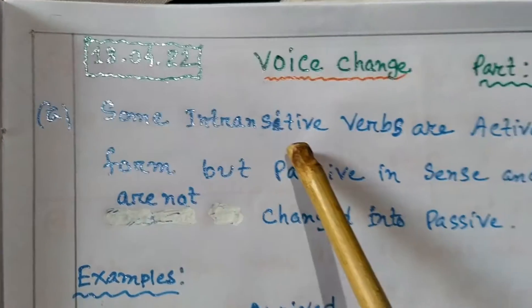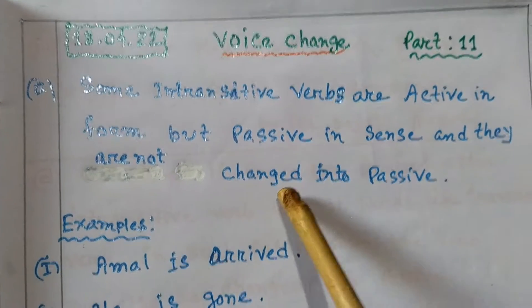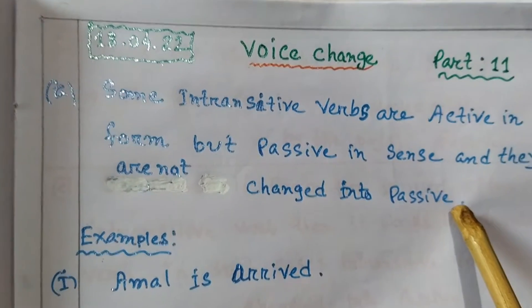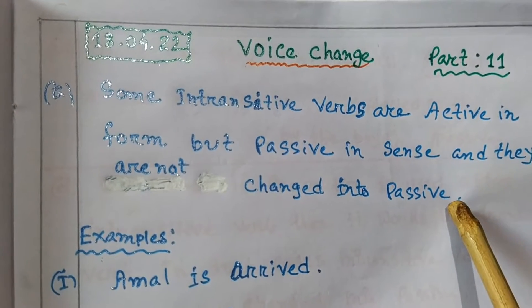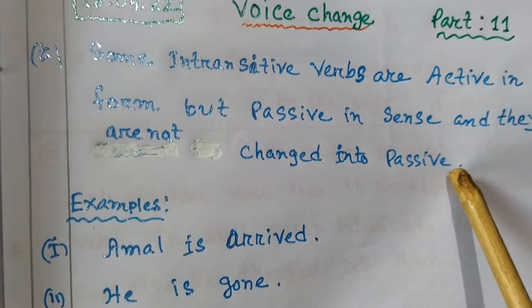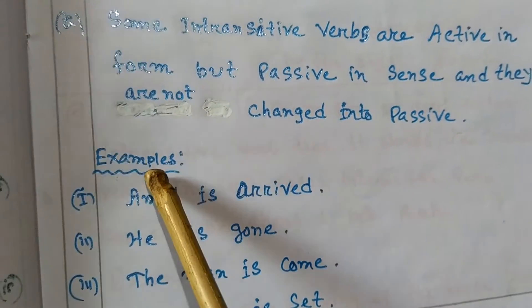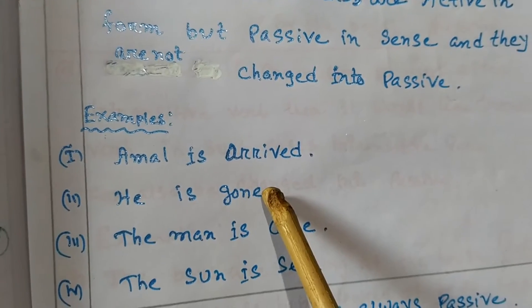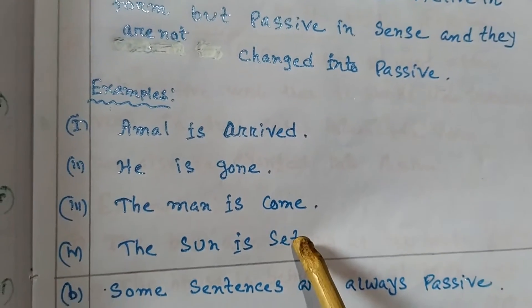Number one: some intransitive verbs are active in form but passive in sense, and they are not changed into passive. Examples — Number 1: Amal is arrived. Number 2: he is gone. Number 3: the man is calm. Number 4: the man is safe.